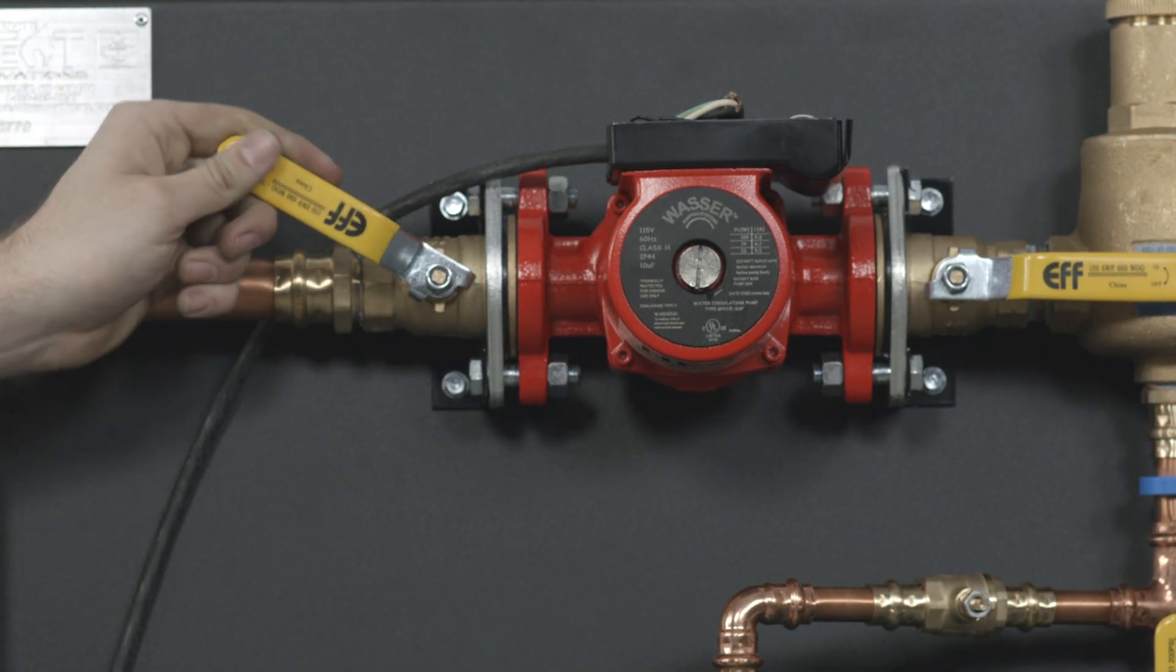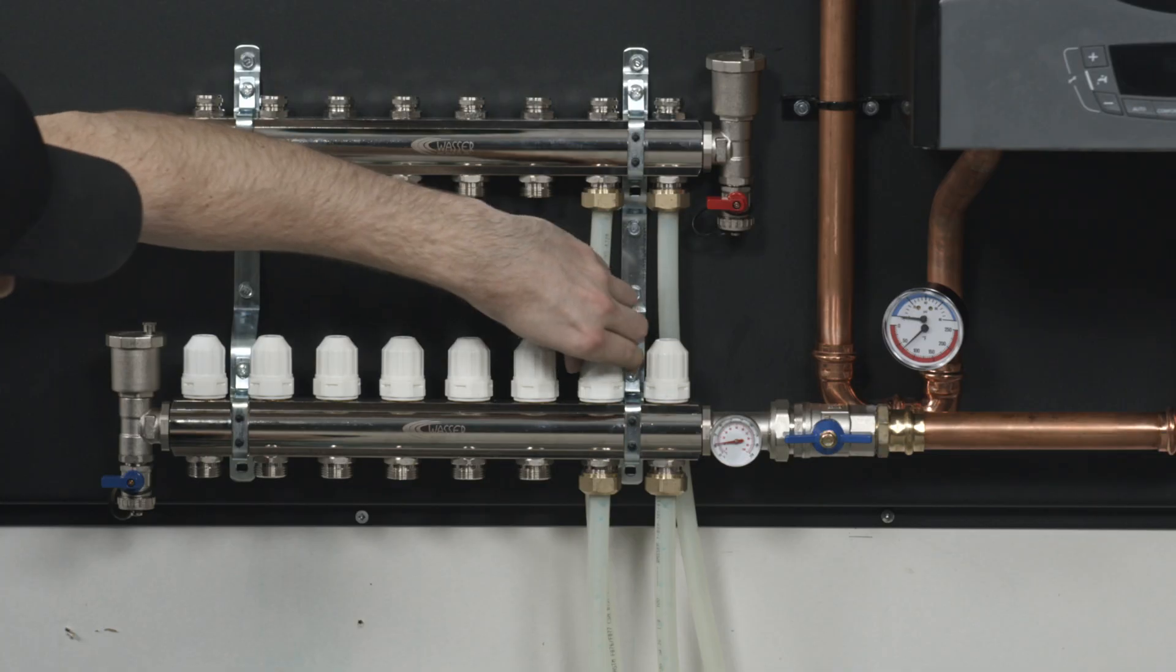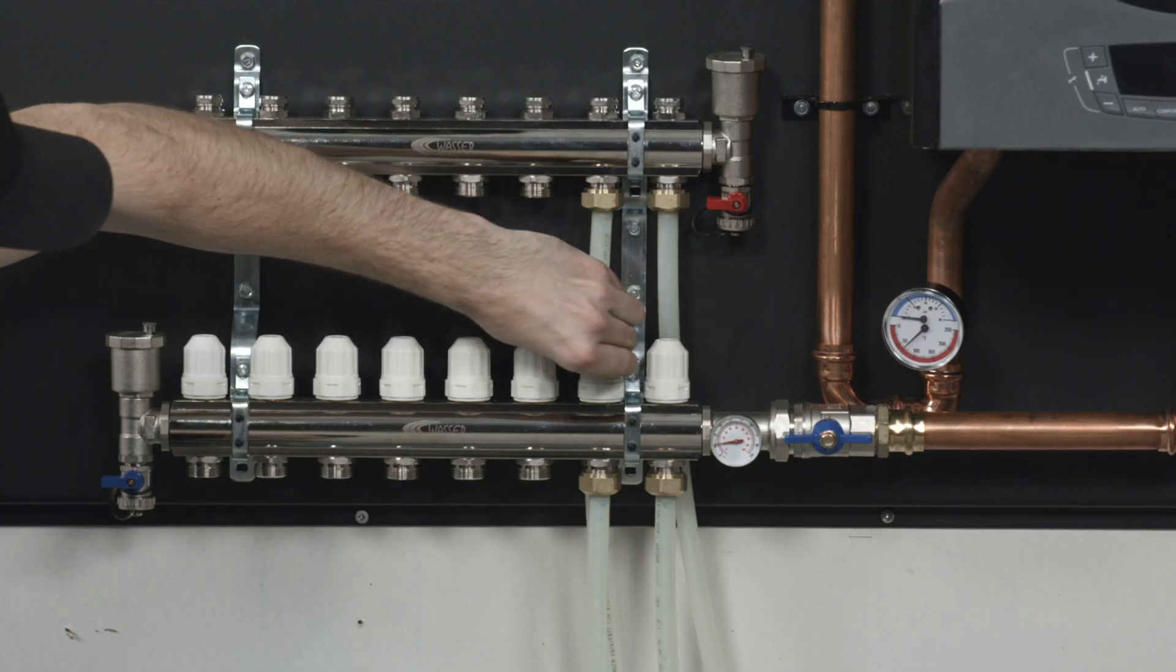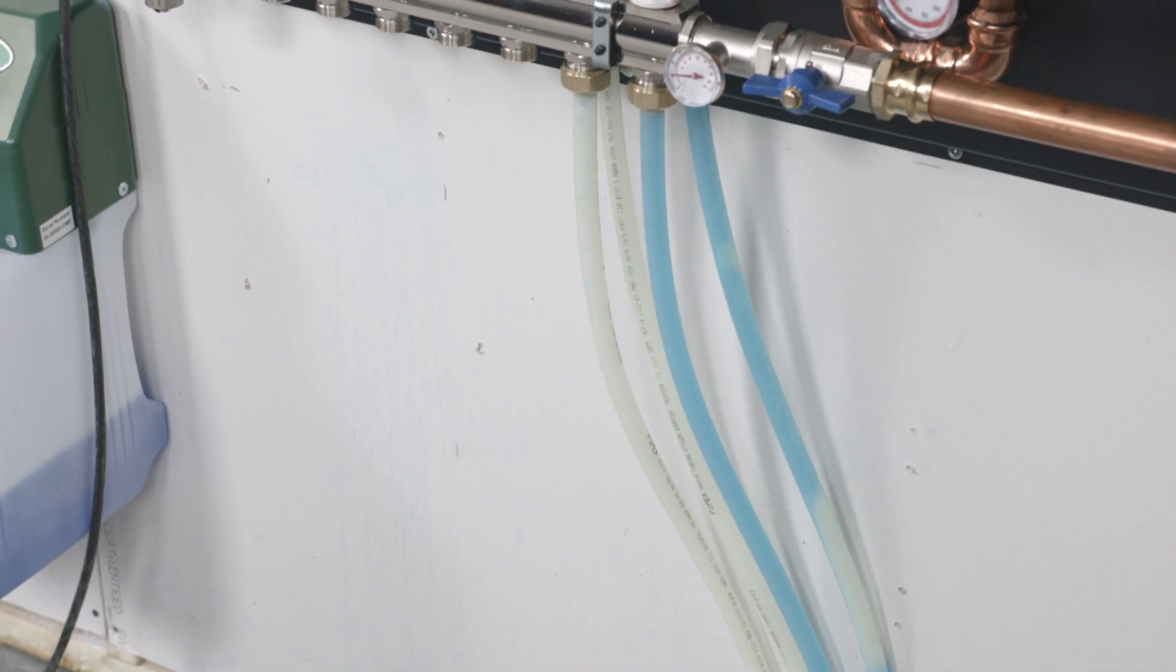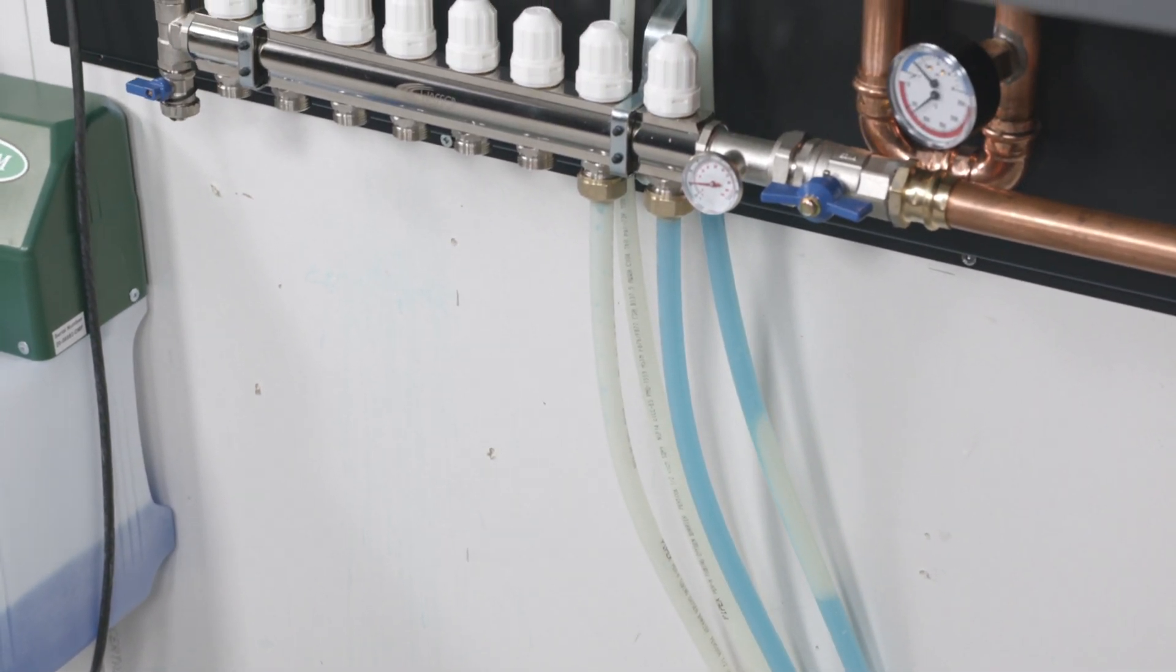Exercise the valve on the pump to assist in air removal. When the glycol feeder stops filling, open the next loop on the manifold and repeat until all circuits are purged of air and filled with water and glycol.